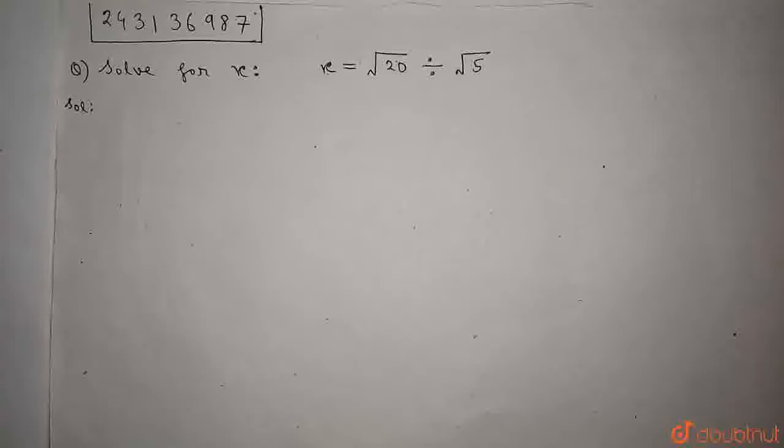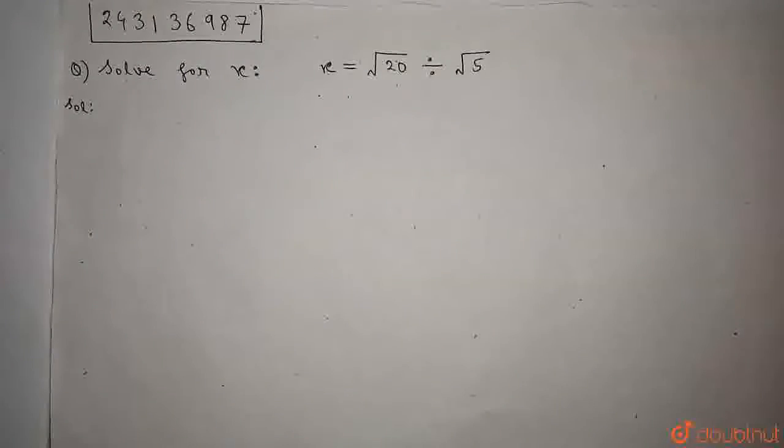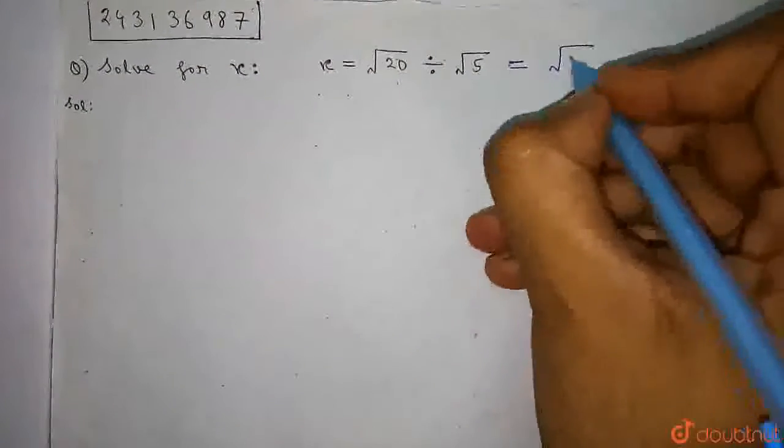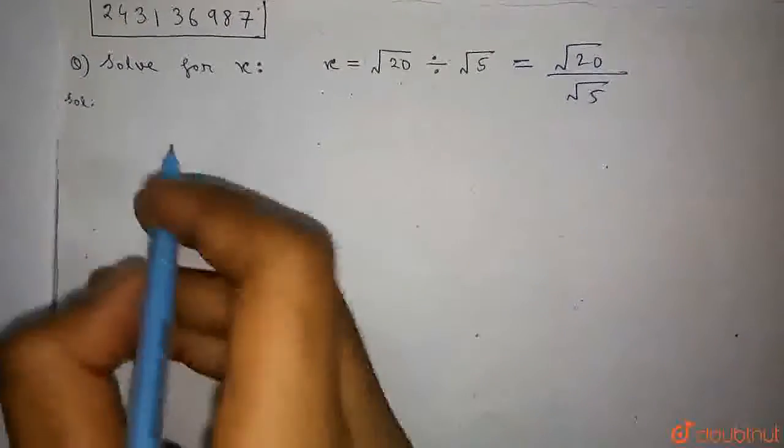So this question asks: solve for x. And x is equal to √20 divided by √5. So it is given √20 divided by √5. So the value of x we need to find out.